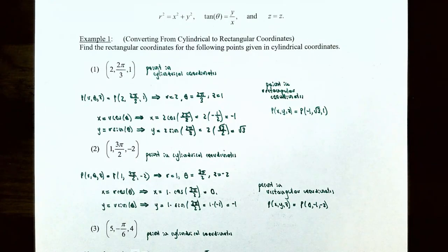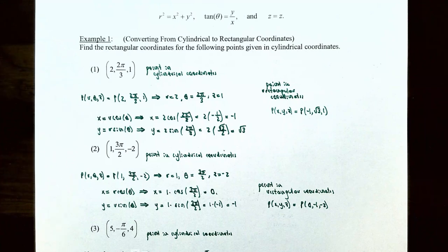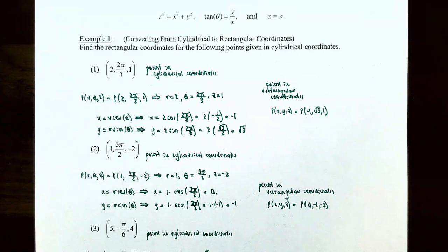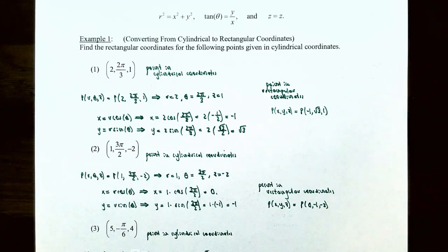Find the rectangular coordinates for the following points given in cylindrical coordinates. Number one: the point (2, 2π/3, 1) in cylindrical coordinates. Here r equals 2, theta equals 2π/3, and z equals 1. Using x equals r cosine theta: x equals 2 times cosine(2π/3) equals 2 times negative one-half equals negative 1. For y equals r sine theta: y equals 2 times sine(2π/3) equals 2 times root 3 over 2 equals root 3. And z stays as 1. So (2, 2π/3, 1) in cylindrical coordinates is the same as (−1, √3, 1) in rectangular coordinates.